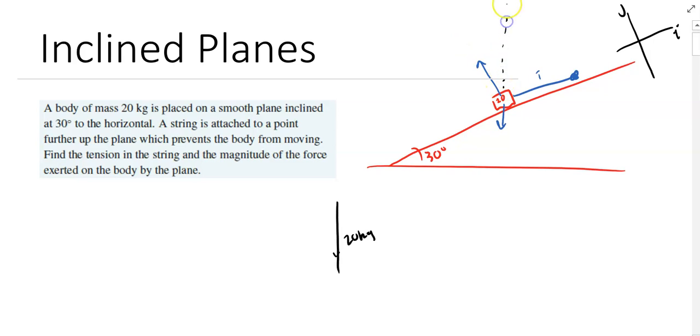Now we've got our normal contact force. Think about what's happening there. It's at a right angle to that. That's 30 degrees there. That's 60 degrees there, which makes that 30 degrees there. So I can draw that like that.